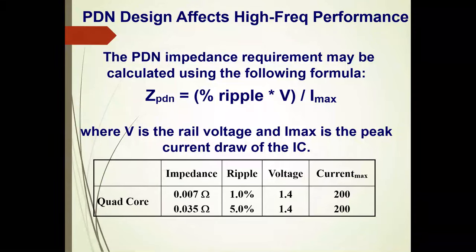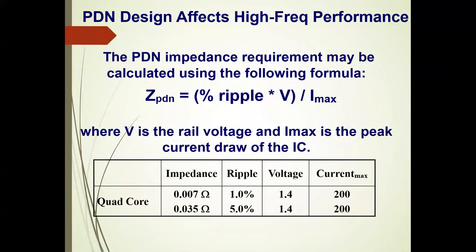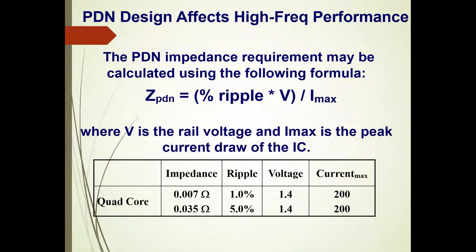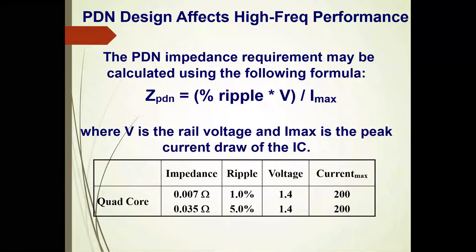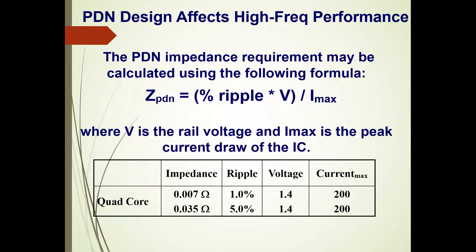As we move to smaller and smaller transistor geometries on the most advanced chips, there's a need to reduce voltage due to bandgap constraints. Voltages are dropping to 1 volt and below while current remains high. This power distribution impedance is an important and difficult requirement for any high-frequency, high-performance board design, and it's one of the things we'll address today.